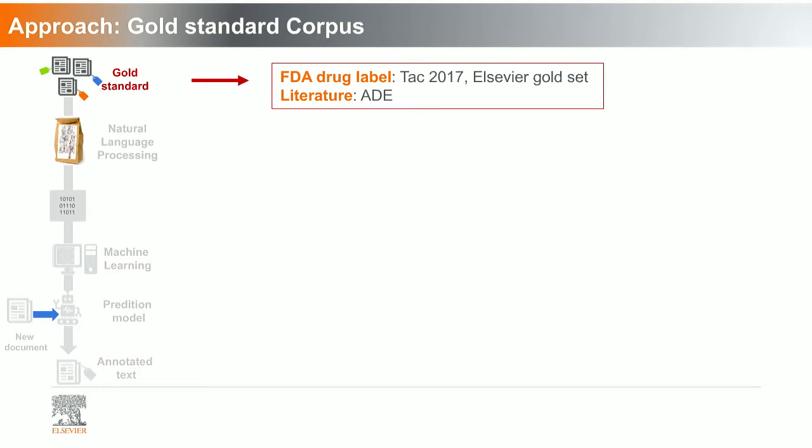To recap: we are using two types of content as a gold standard — FDA drug labels (TAC and Elsevier gold set) and literature gold set.